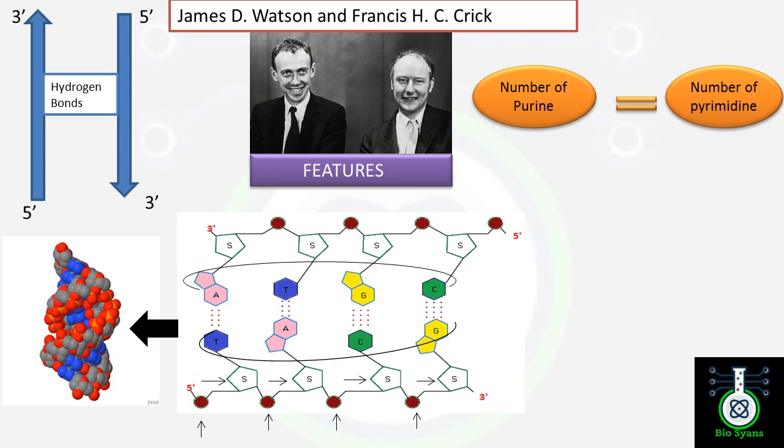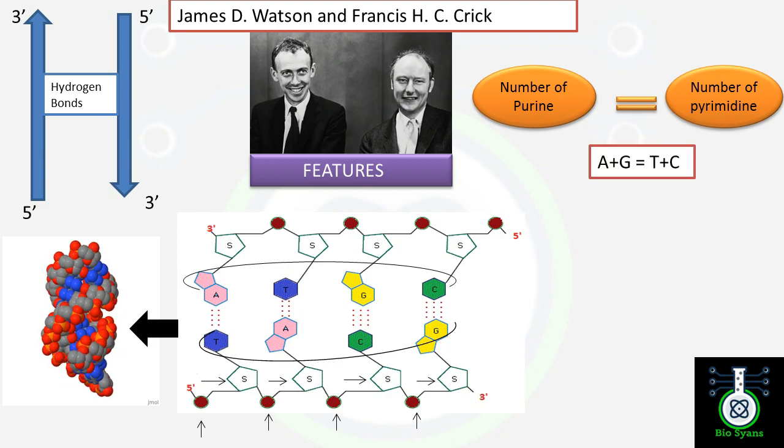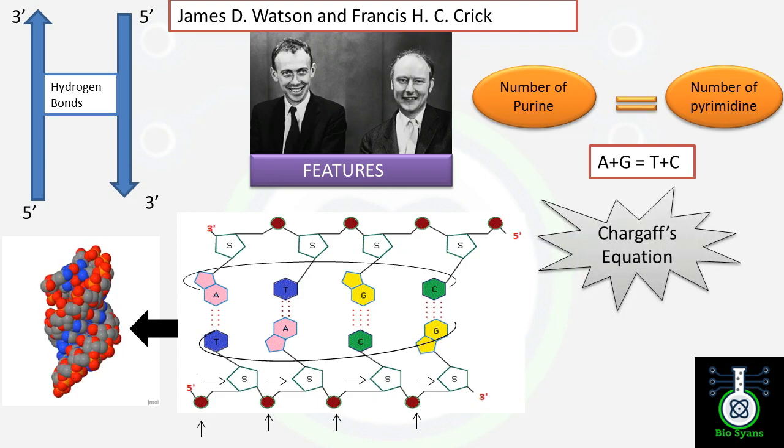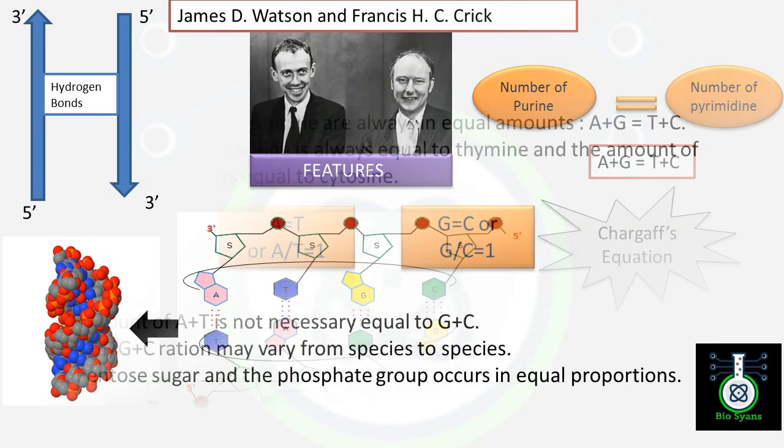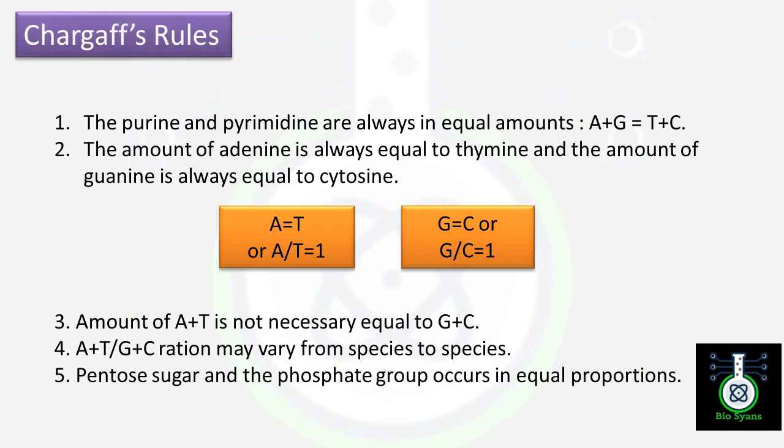Also, the fifth point is the number of purines is always equal to the number of pyrimidines, which is also Chargaff's equation. Chargaff's rule, given by Erwin Chargaff in 1950, states that purines and pyrimidines are always in equal amounts.